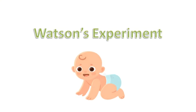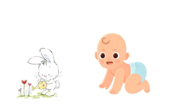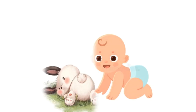Now we will learn the experiment by Watson. Watson conducted a number of experiments, and one was done on a human baby of 11 months named Albert. He was given a rabbit to play with. Since rabbits are very cute, Albert naturally wanted to touch the rabbit. He touched the fur of the rabbit and was pleased, while Watson carefully watched and observed the pleasant responses of the baby.